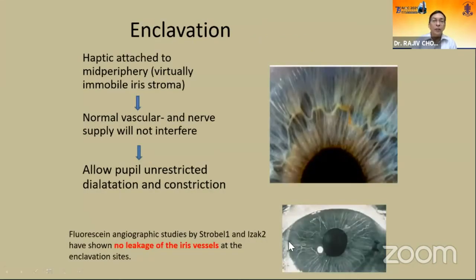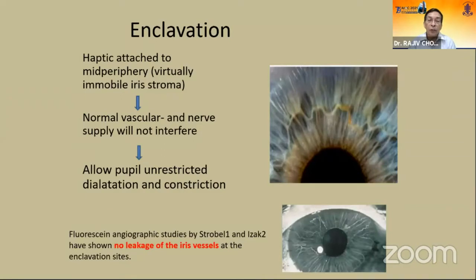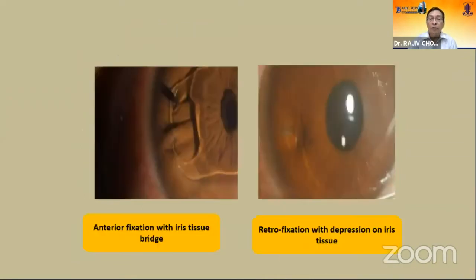How do you see the enclavation? The haptic attaches to the mid-periphery, which is the relatively immobile iris. Normal vasculature and nerve supply will not interfere. It allows pupil unrestricted dilation and constriction — it will be slightly elliptical. There is a study with fluorescein angiography showing no leakage of the iris vessels at the site of enclavation. It is visible as a dent when it is a posterior placement — retrofixation.